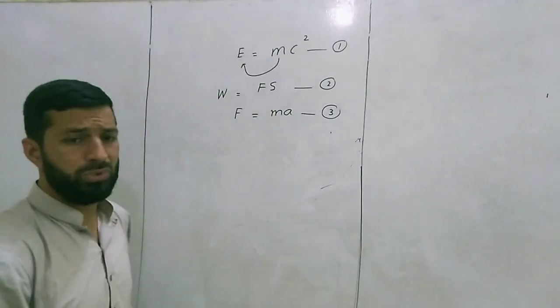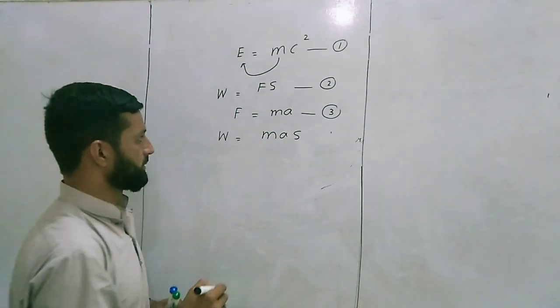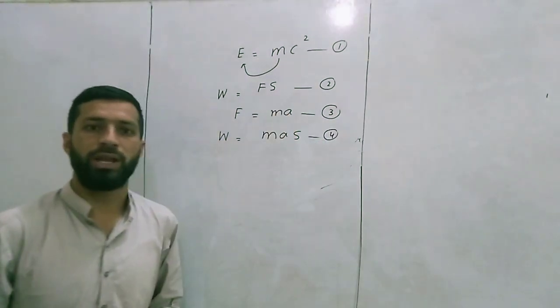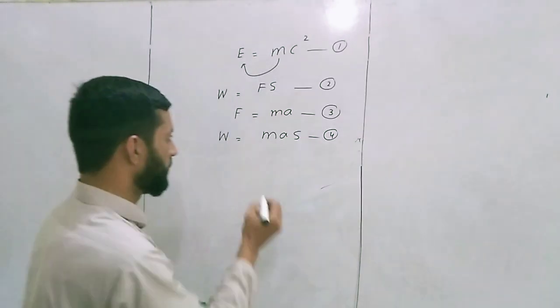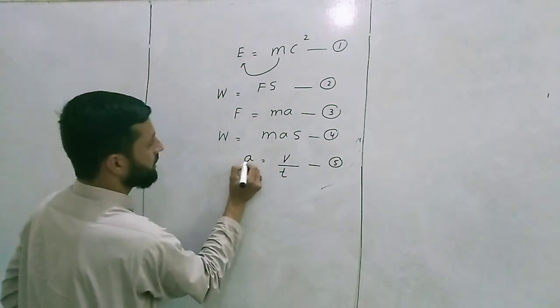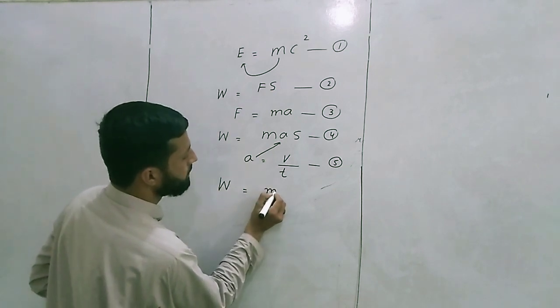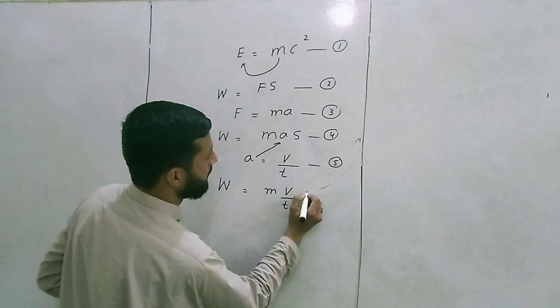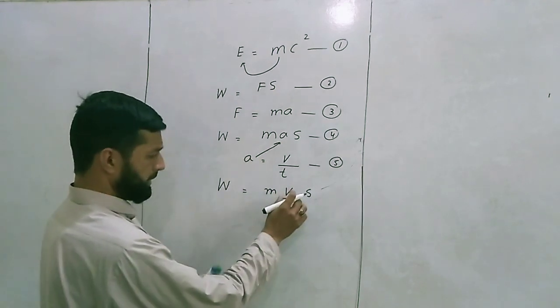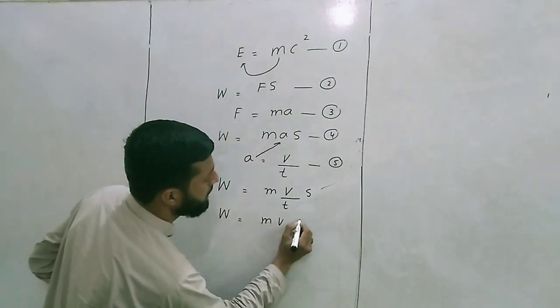When we put this equation into the work equation, it will take the form W equals ma times s. This equation becomes mvs divided by t. If we segregate these two, it will take the form W equals mvs divided by t.